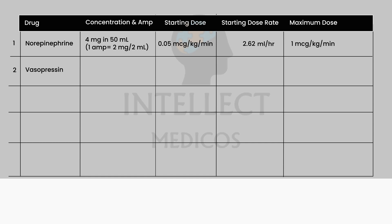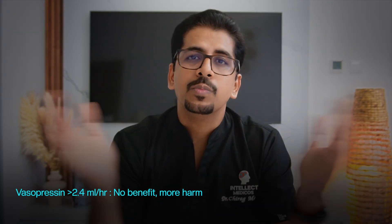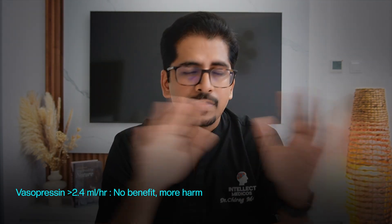Vasopressin is given at a fixed dose of 0.03 units/min — it is not weight-dependent. Prepare by taking two ampules (each 20 units/ml, so 40 units total) diluted in 40 ml, giving 1 unit/ml. On the infusion pump, start at 1.8 ml/hr. The maximum is 0.04 units/min, which is 2.4 ml/hr. Do not exceed 2.5 ml/hr — beyond this there is no benefit and increased risk of ischemia.